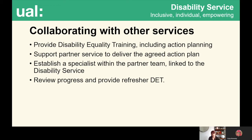The formula we use is: wherever possible, provide disability equality training including an action planning component; then support each partner service to deliver the agreed action plan; work together to establish an in-house specialist within that partner team linked to the disability service; and finally, regularly review progress and provide refresher disability equality training at least every three years. We've established a range of other roles with partner services, including an assistive technology coordinator and a single point of contact for access within our estates team.